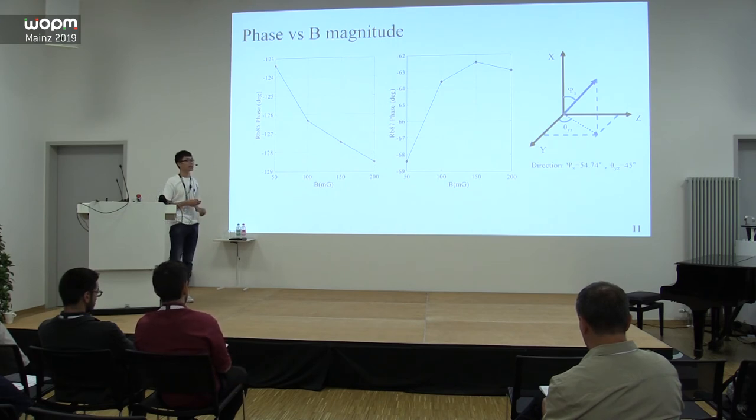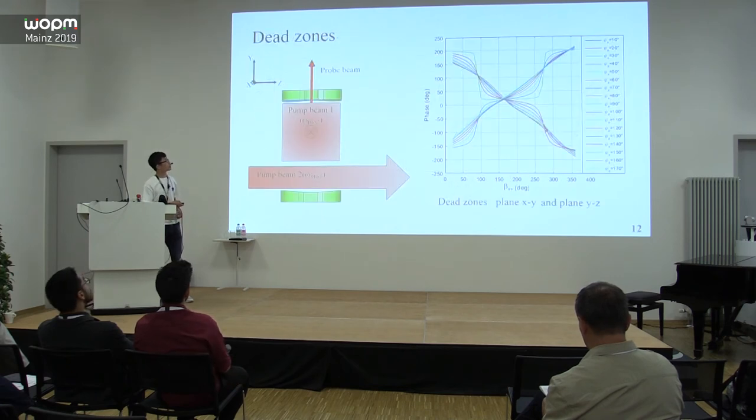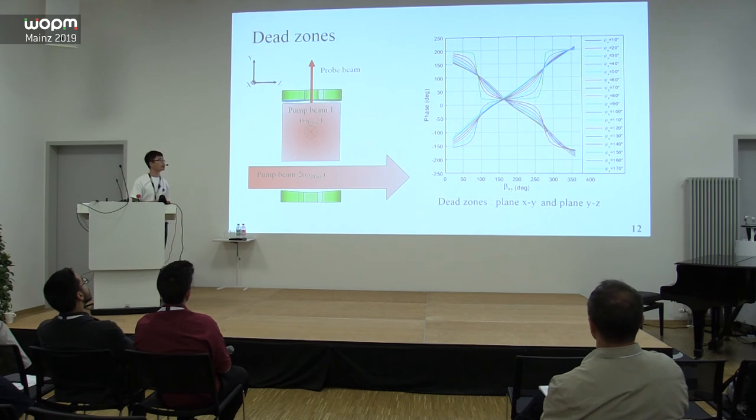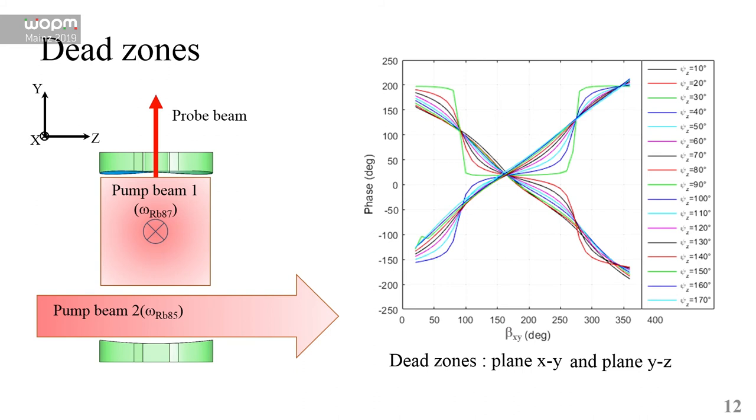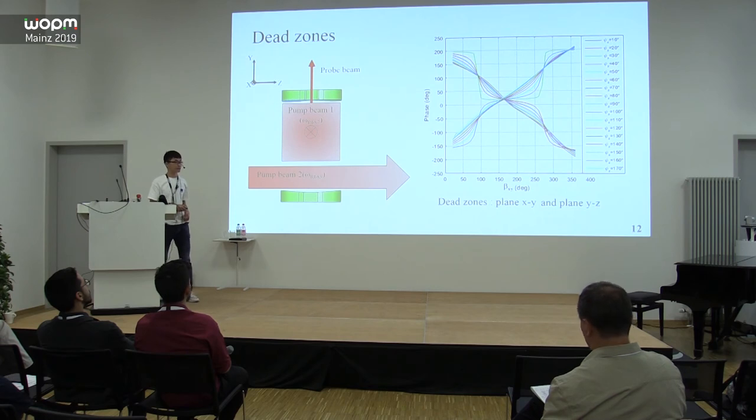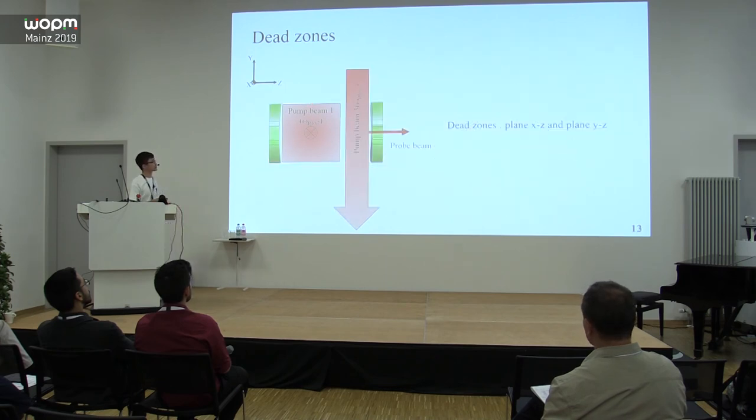We are also concerned about the dead zones of our vector magnetometer. From this figure, we can see that we can't get a certain βxy when ξz equals 90 degrees, as the green line shows. This means the plane XY is a dead zone for us. Similarly, plane YZ is also a dead zone.